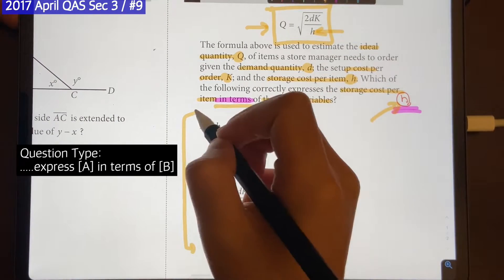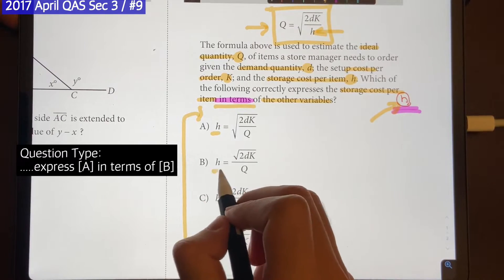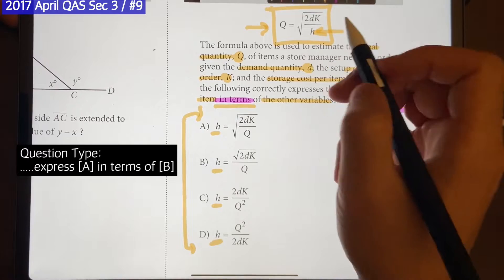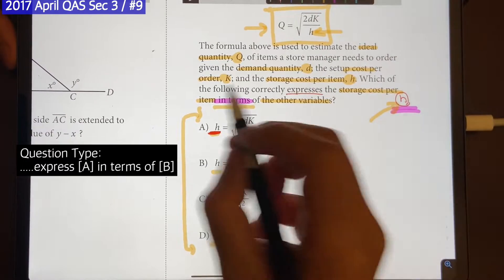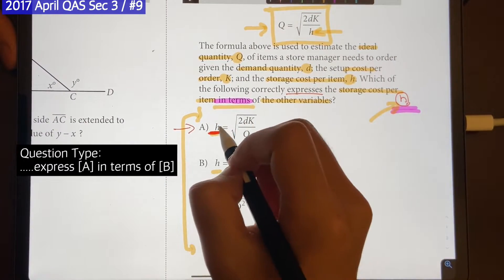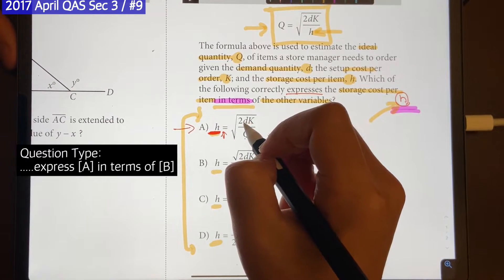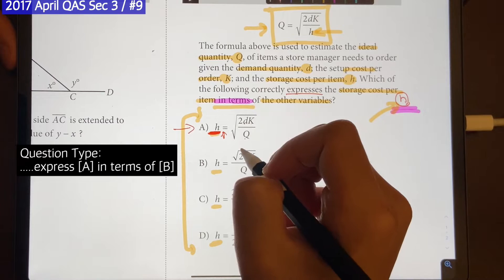That's why every single answer choice in the question has H all by itself. Because the goal of the question, what they want you to do is leave H by itself. If A is the correct answer, it's going to show you what H is equal to by using the other variables like D, K, and Q. Does that make sense?